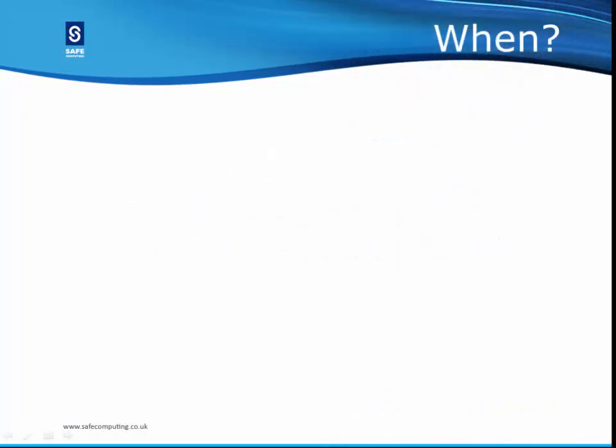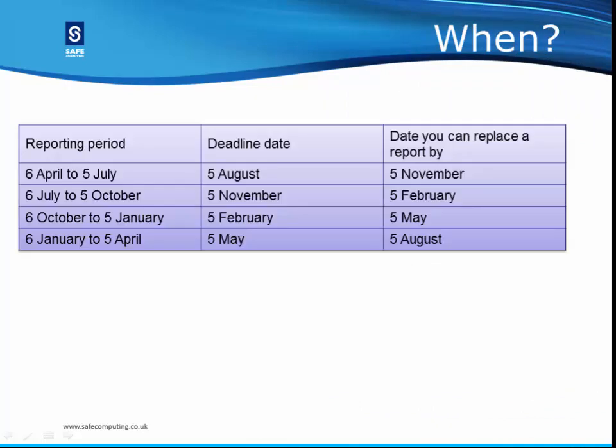When should the report be produced? The report is required quarterly for each tax year from April 2015. The first reporting period is 6 April 2015 to 5 July 2015, and must be uploaded to the HMRC by 5 August 2015.